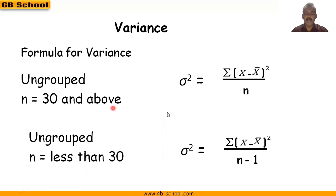If sample size is 30 and above, the denominator will be n. There is a slight difference in the variance formula based on sample size.